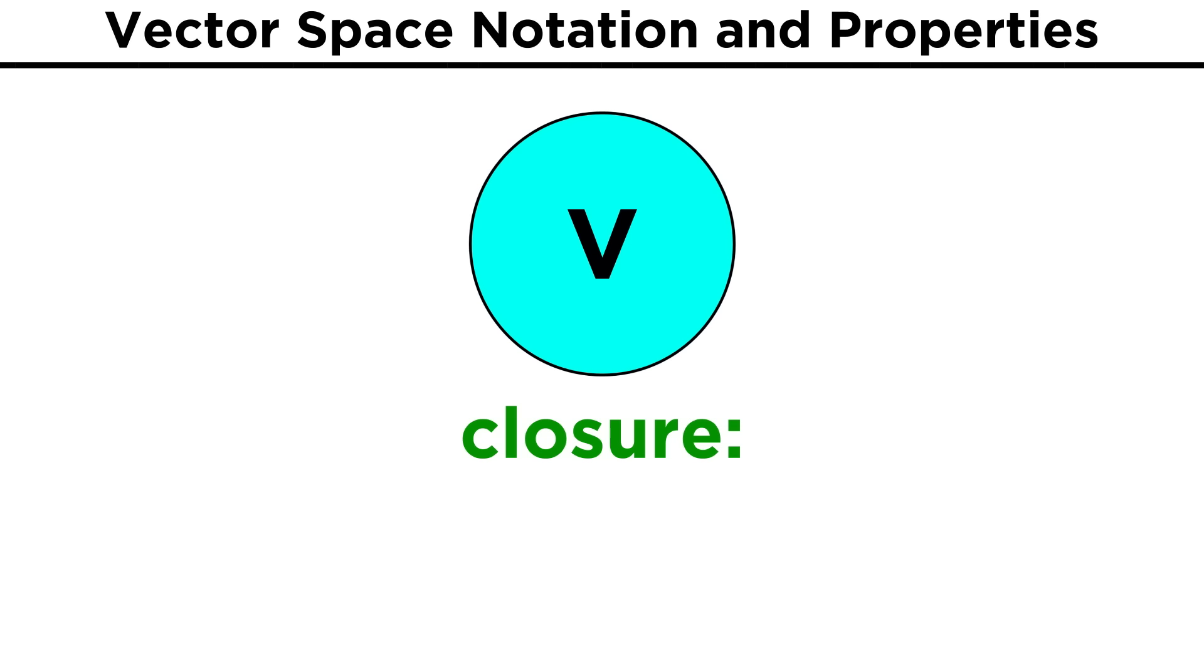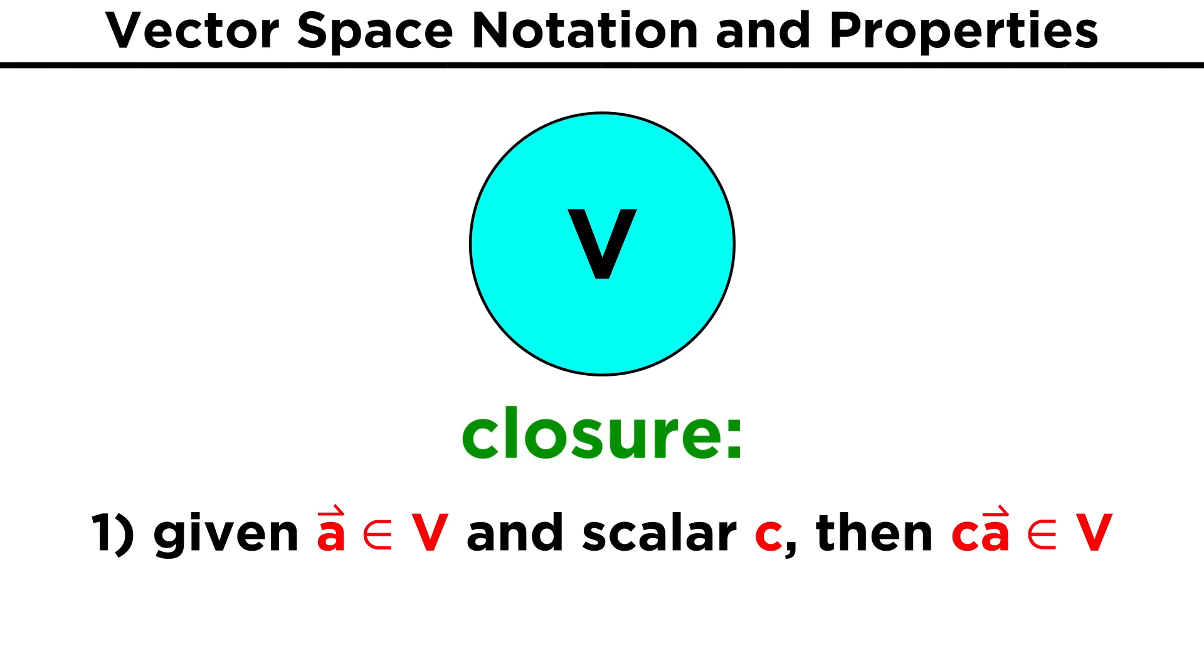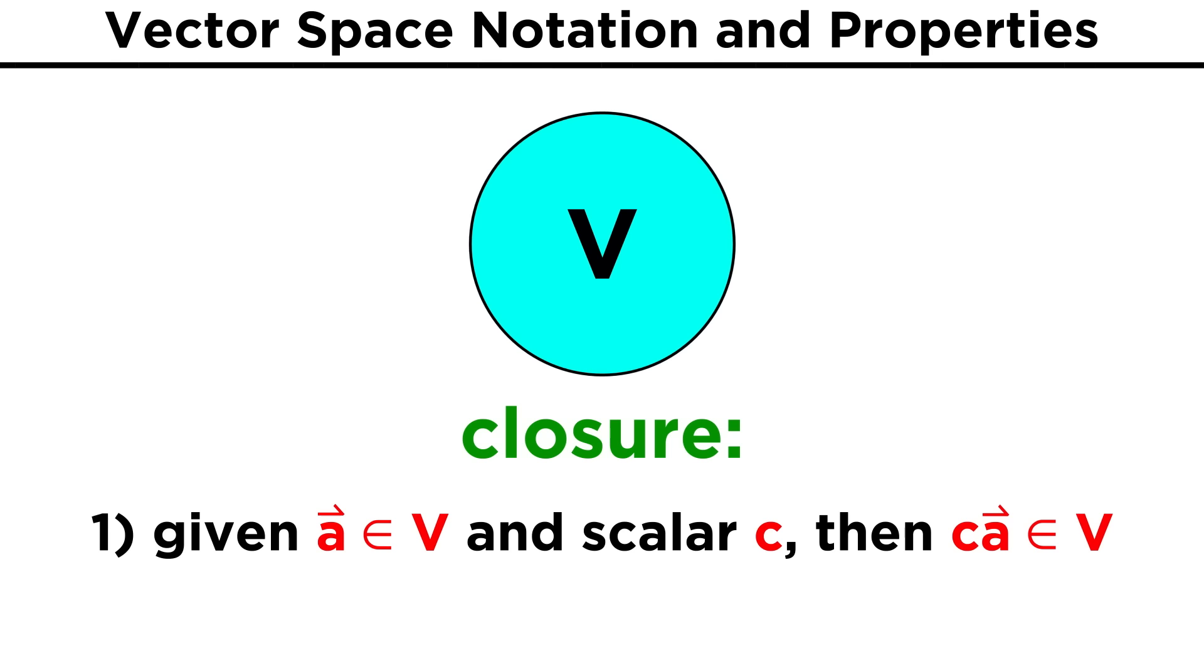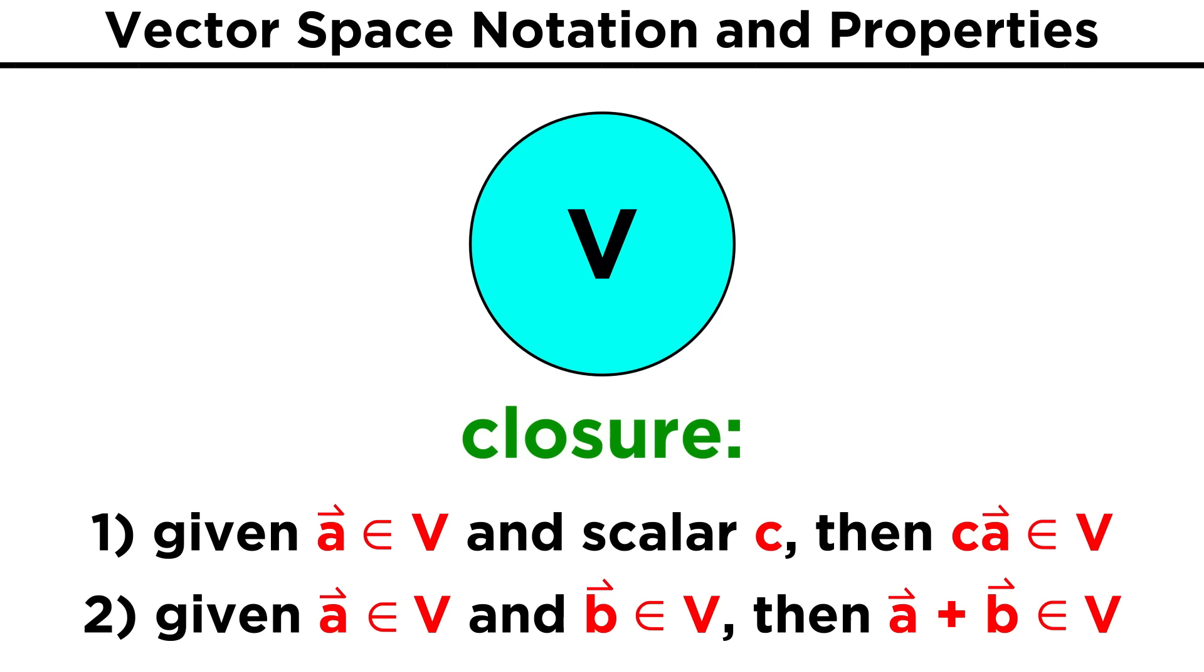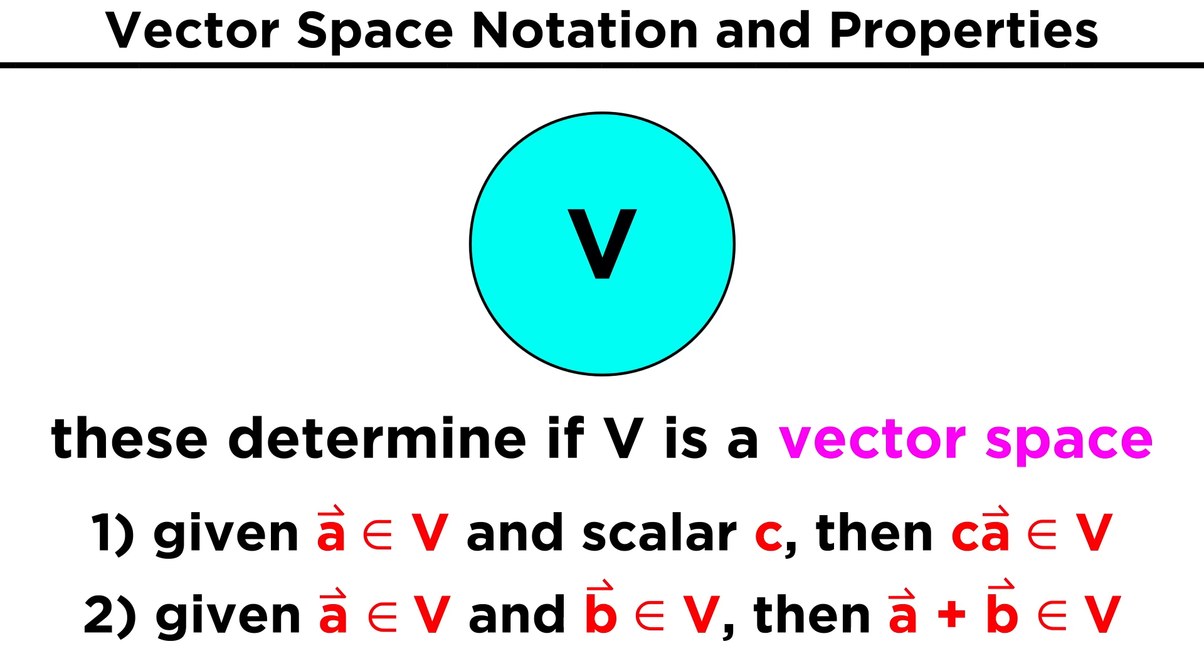Now, an important property of a vector space is something called closure. Closure requires two properties. First, for an element a of V, multiplying a by any scalar will give a result that is also within V. Second, for any two elements a and b within V, adding the two elements will also give a result that is contained within V. These closure properties are what determine if V is a vector space.